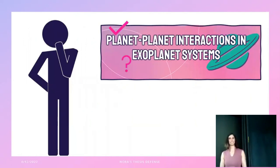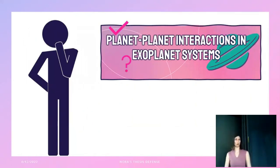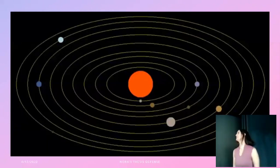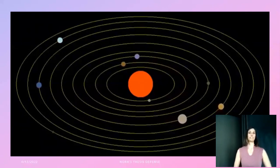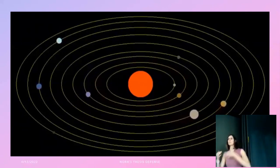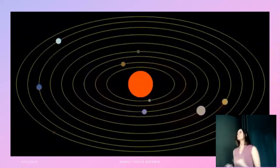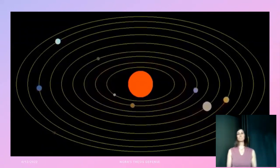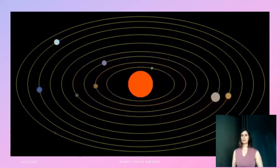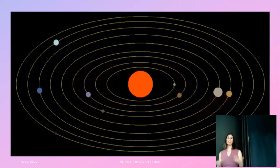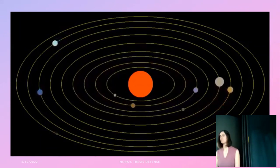You might be thinking: why exoplanet systems? Is gravity different there? No — gravity is the same everywhere as far as we know. But the solar system was really the only example of a planetary system we had for centuries, so it's been intensely studied. In just the last 30 years, exoplanets have finally given us new systems to observe and learn about.